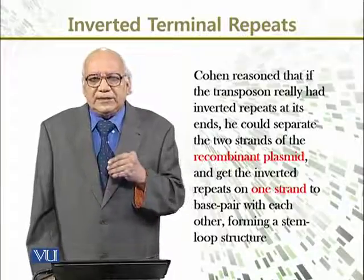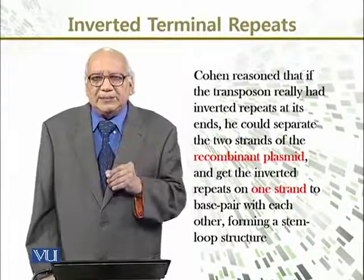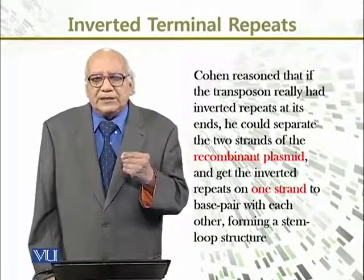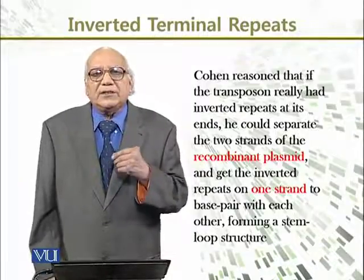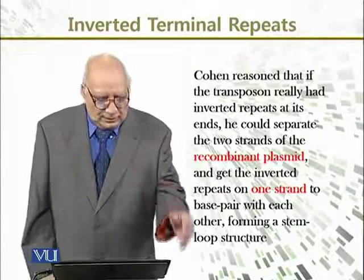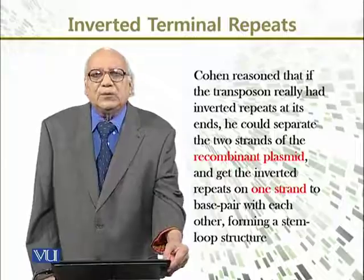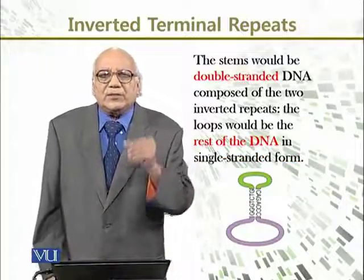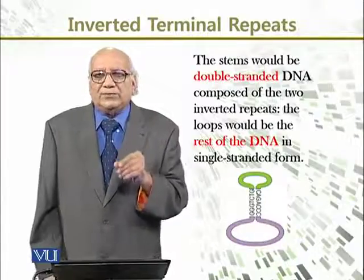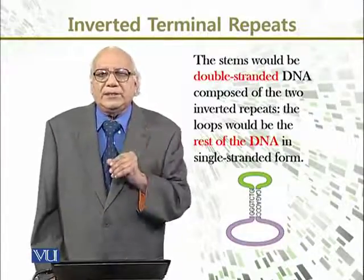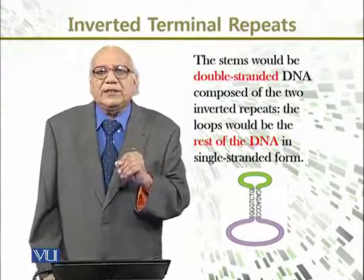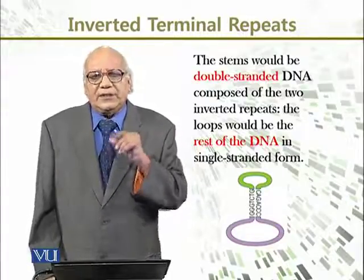What he does is that he gets the inverted repeats on one strand to base pair with each other, forming a stem-loop structure. The stem would be double-stranded DNA composed of the two inverted repeats, and the loop would be the rest of the DNA in single-stranded form.